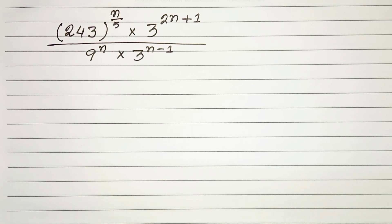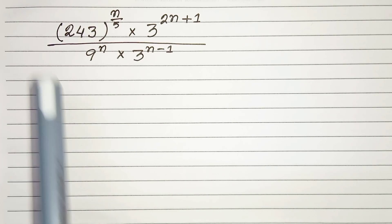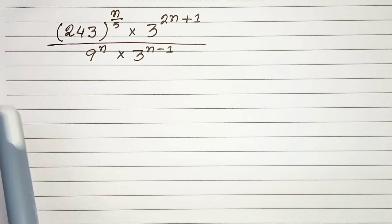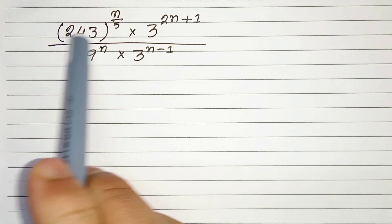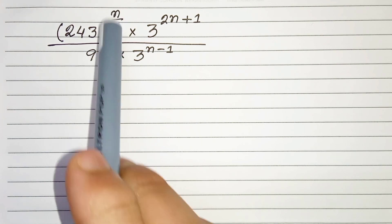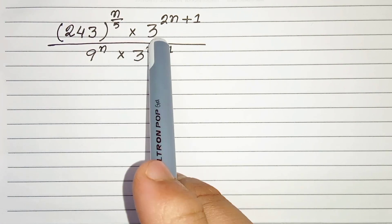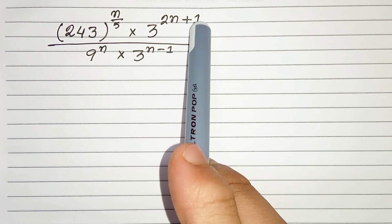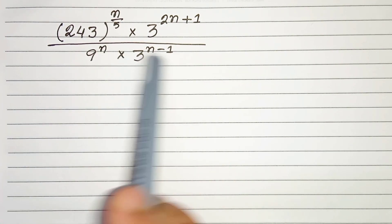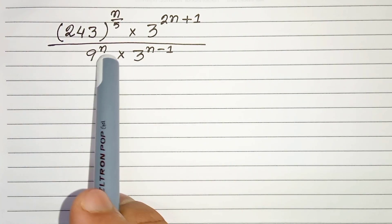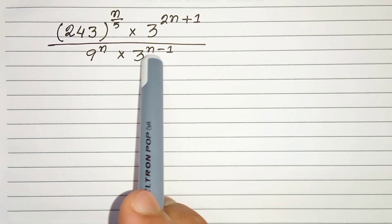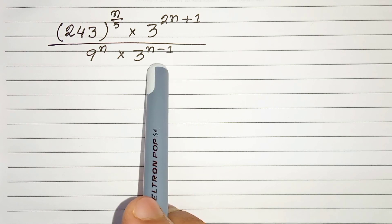Hello everyone! In this video we have to evaluate this expression. We have 243 to the power n by 5, times 3 to the power 2n plus 1, divided by 9 to the power n times 3 to the power n minus 1.